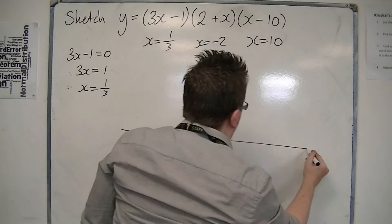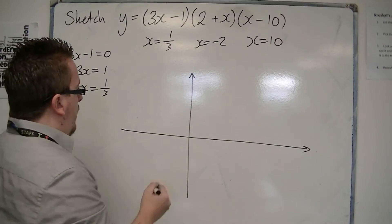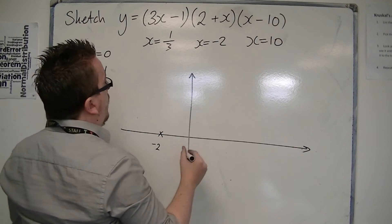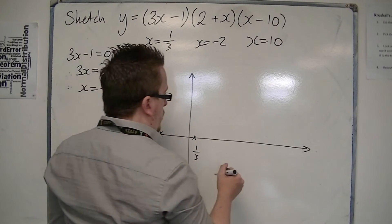So what we have is it crossing at minus 2. We've got 1 third, and we've also got 10.